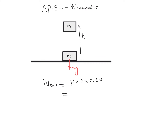Here, force is mg, displacement is h, the force acts in the downward direction and displacement is in the upward direction, so the angle between force and displacement is 180°. Therefore, work done = mg × h × cos 180° = mg × h × (−1) = −mgh. So work done by gravitational force is −mgh.